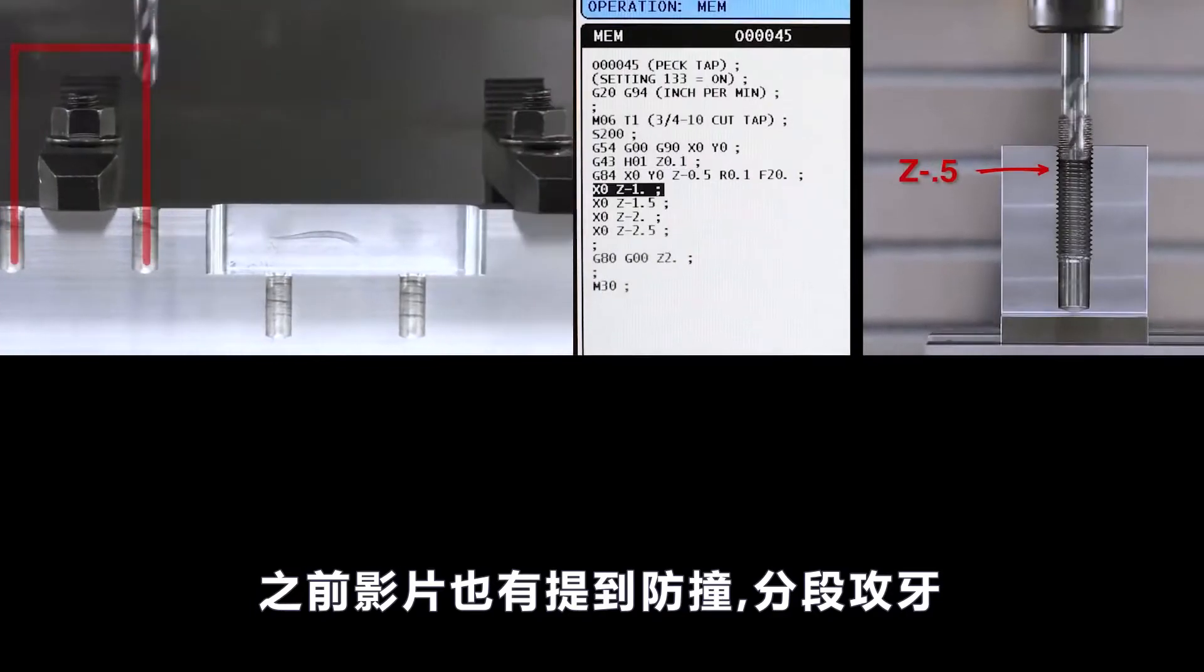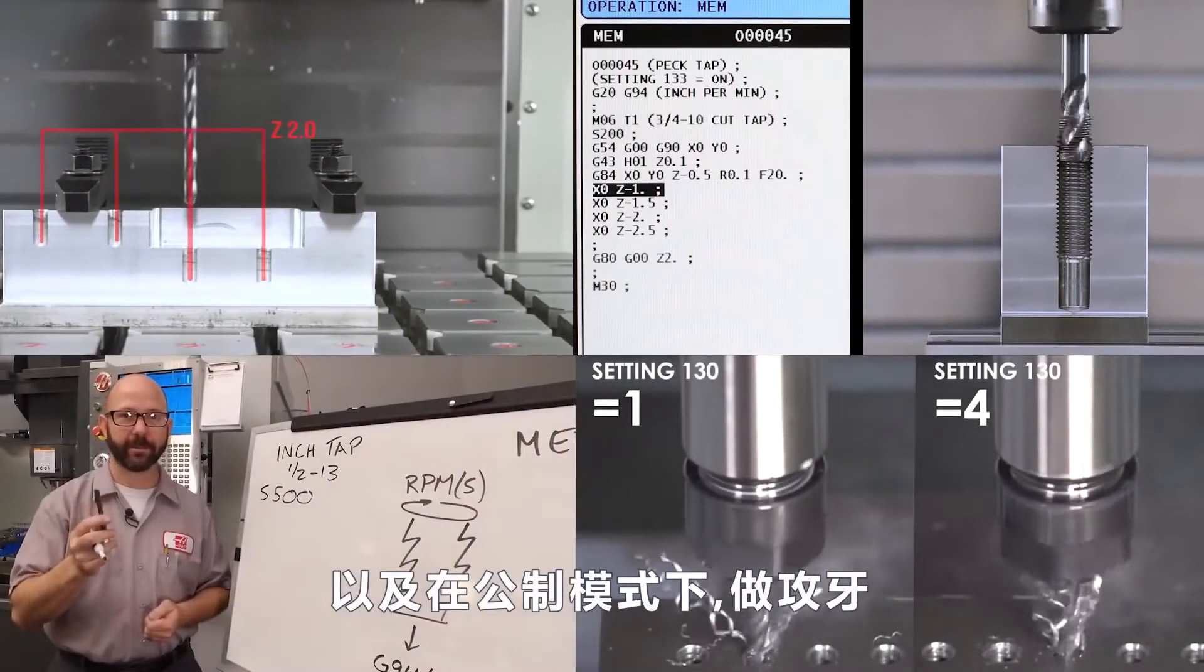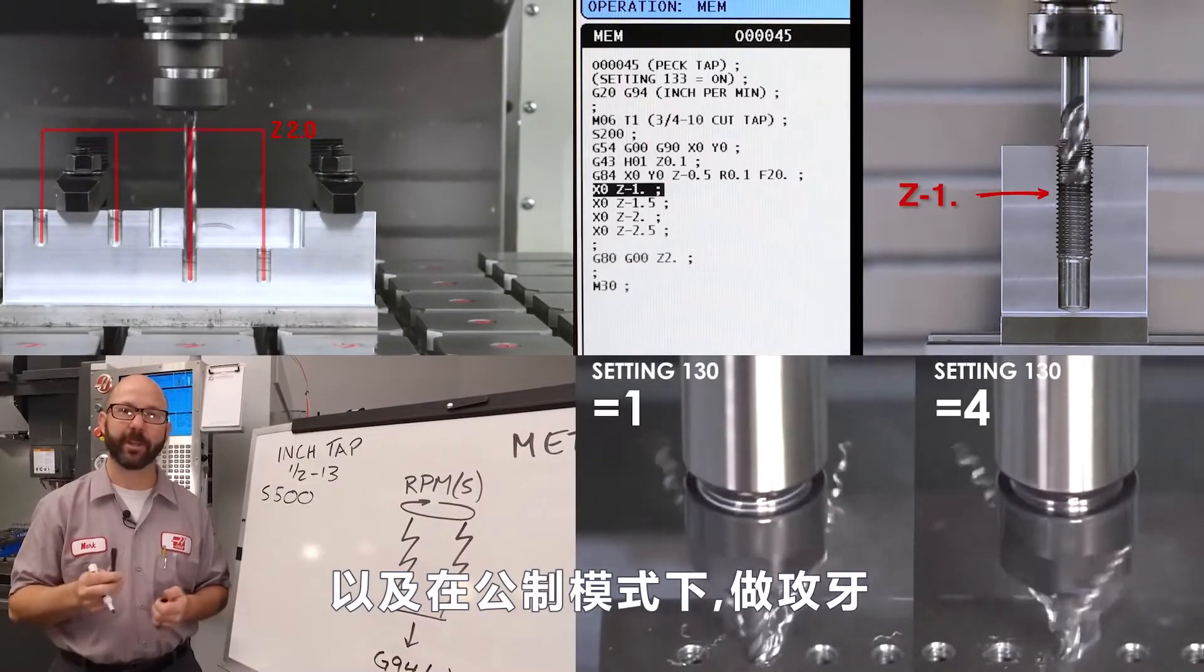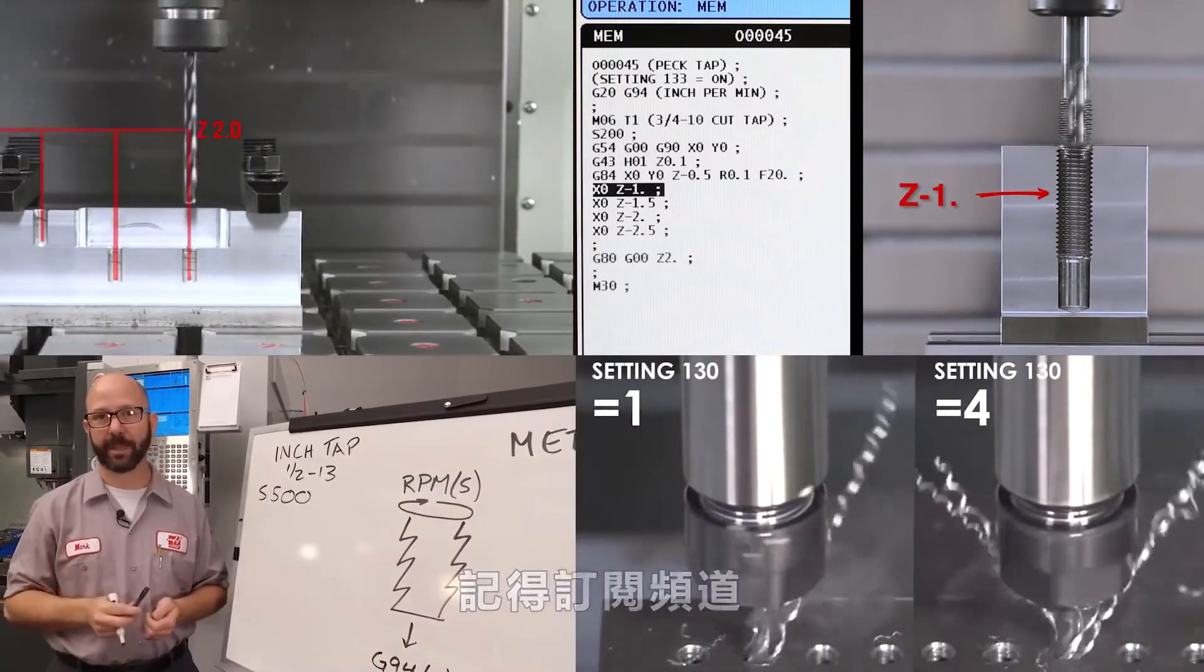We've also included links to videos that cover clearance planes, pec tapping, tapping faster with setting 130, and tapping on a machine that is set up in metric mode. Be sure to subscribe to these videos so you don't miss any of these tips as they're made.